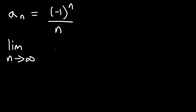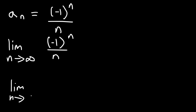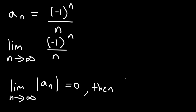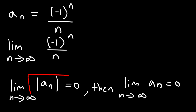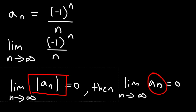So what is the limit as n approaches infinity for (-1)^n / n? To find this, we use the absolute value theorem for sequences. If the limit as n approaches infinity of the absolute value of a_n equals 0, then the limit as n approaches infinity of a_n is also equal to 0. That's the basic idea behind the absolute value theorem.